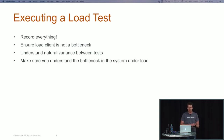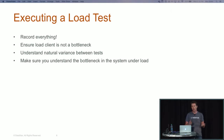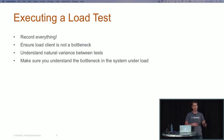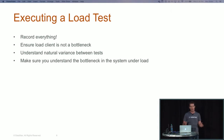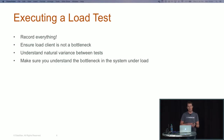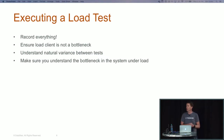The third tip is to understand the natural variance between tests. Definitely if you're running in a cloud environment, you'll see variance from test to test. You need to understand this, particularly if you're doing benchmarking to understand the effect of tuning different parameters — you need to know whether the difference between test one and test two is just natural variance or an actual impact of the change you've made. You almost certainly have to run multiple tests with identical parameters to understand the variance in the environment.